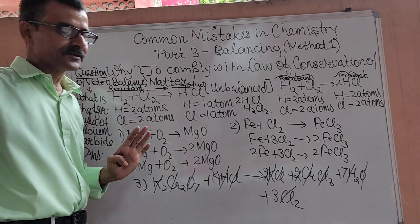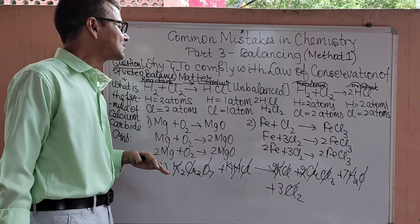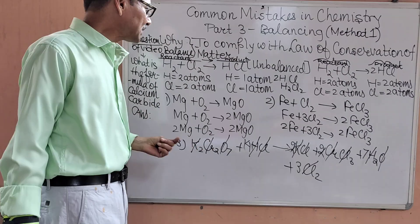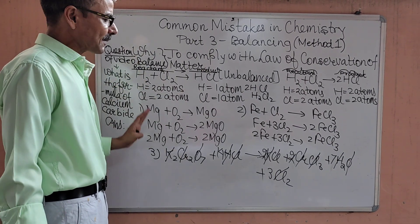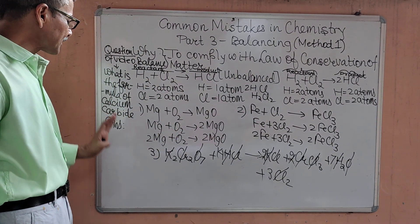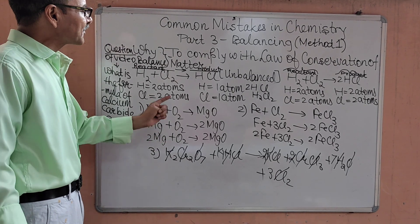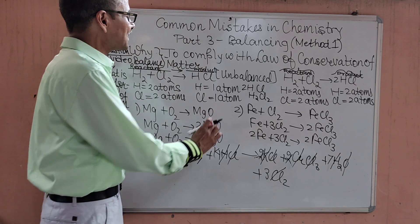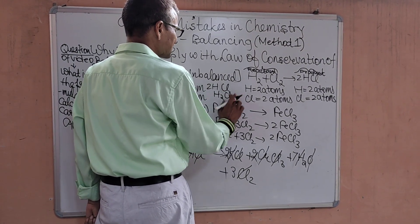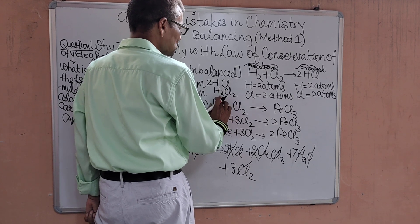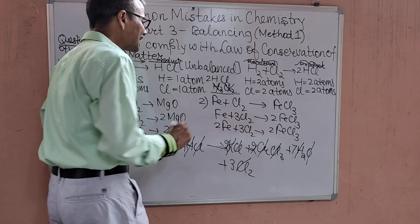So the equation is perfectly balanced just by observing, analyzing and multiplying wherever required. What we are doing? We are carefully observing, analyzing and multiplying, but never multiplying inside the atom. Like here 2Cl is okay, but if you multiply inside the molecule, I mean the molecule H2Cl2, this will make the formula wrong and this will be the wrong balance.